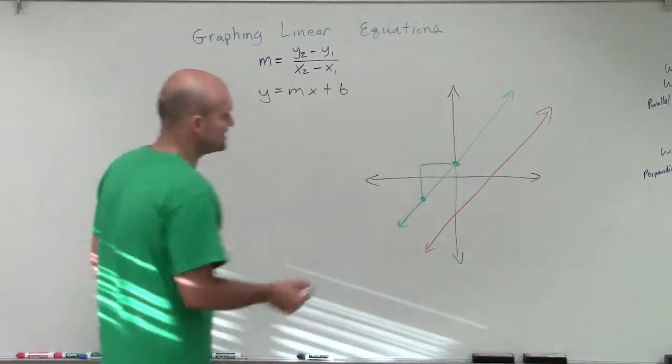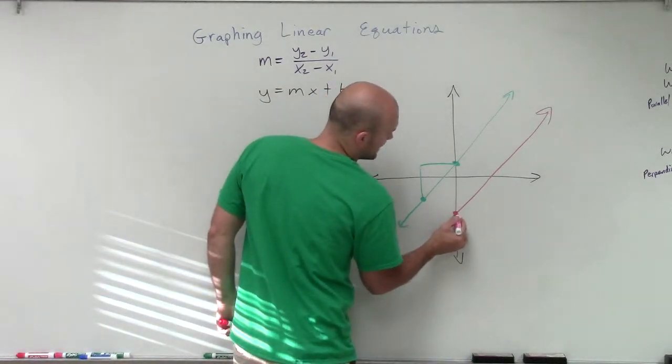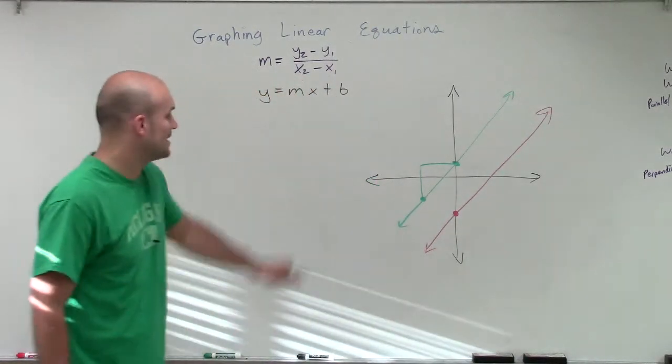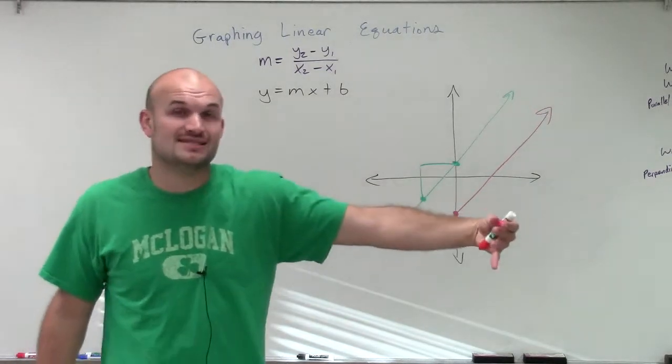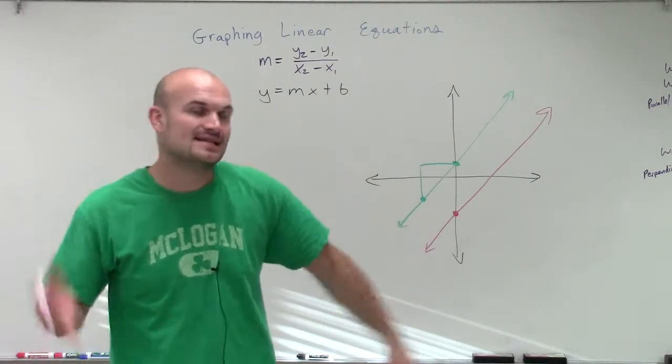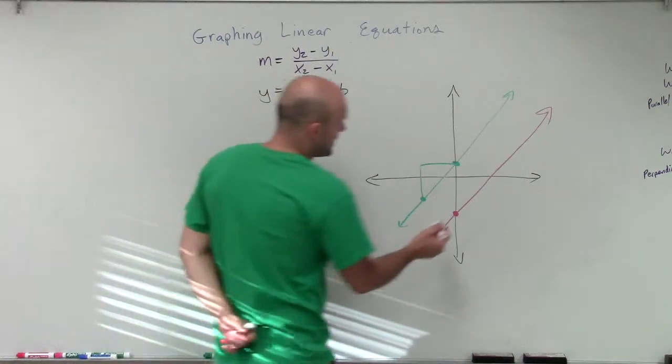Now, one thing to notice about this is parallel lines do not have the same y-intercept. Their value of b is not the same. If their value of b was the same, then the lines would be exactly the same. Because the rate of change,